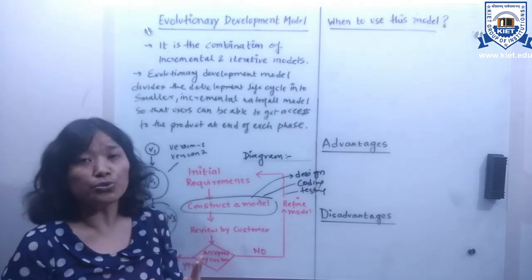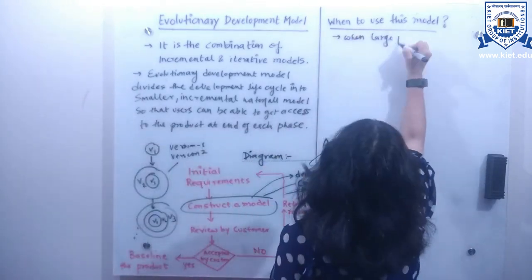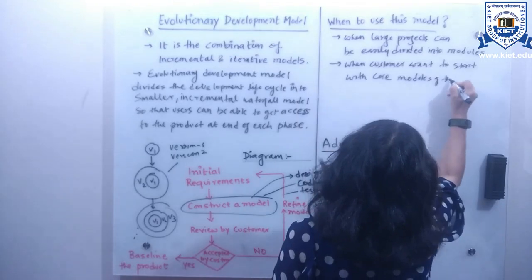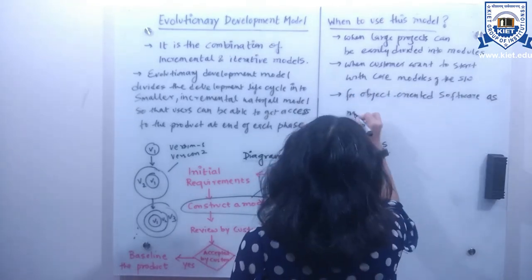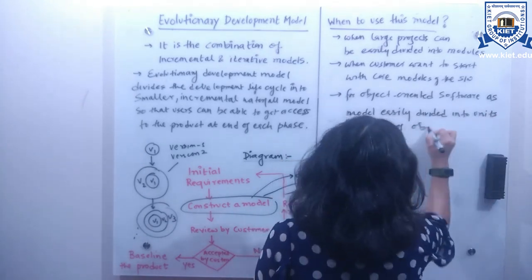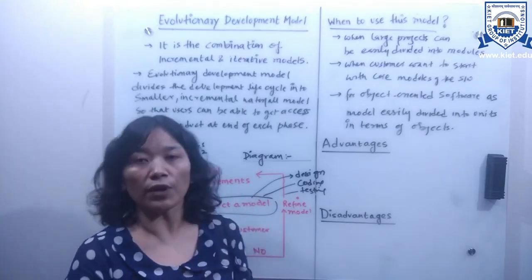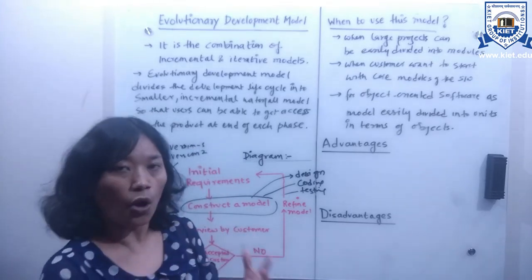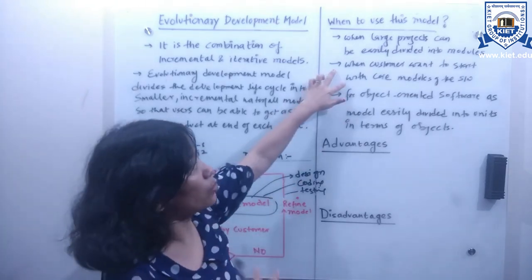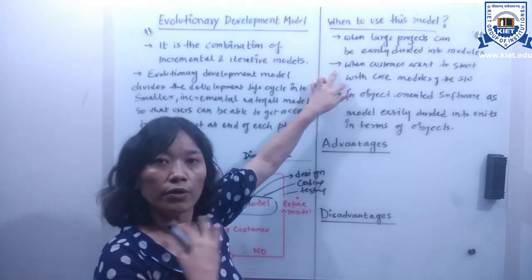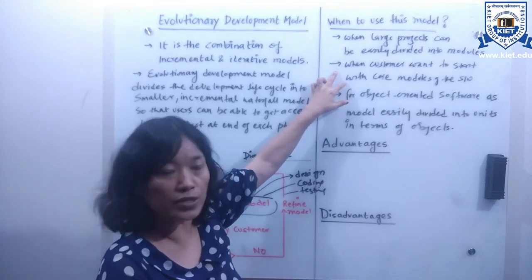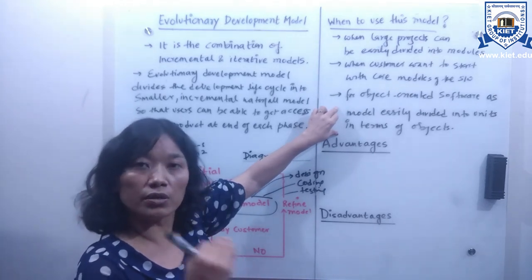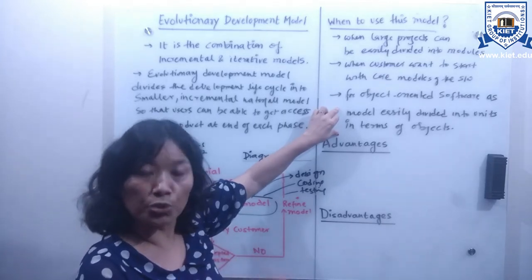This evolutionary development model is suitable for large projects which can be easily divided into modules or smaller sections. Second, when customers want to start with some core features or core modules of the software system. Third, it is well suited for object-oriented software because this model can easily divide it into units in terms of objects.